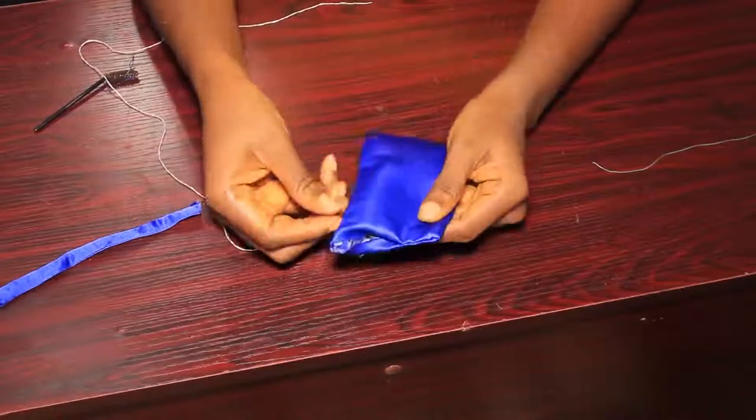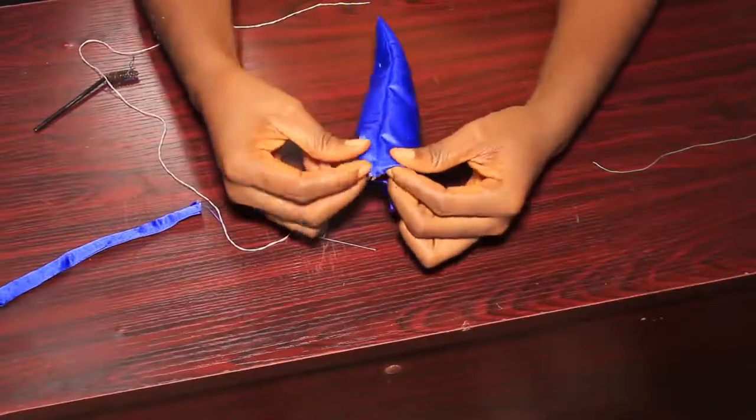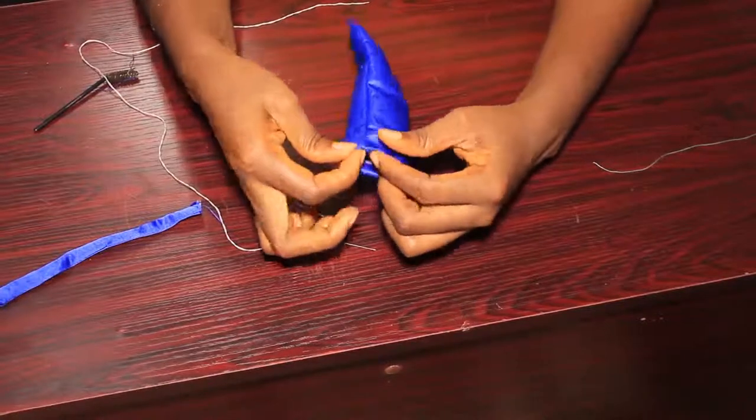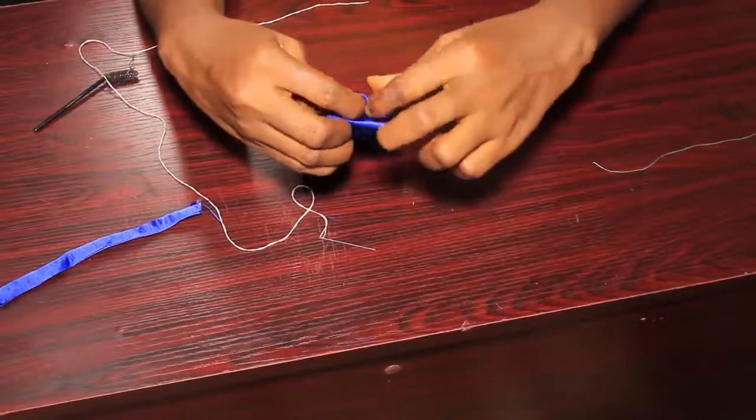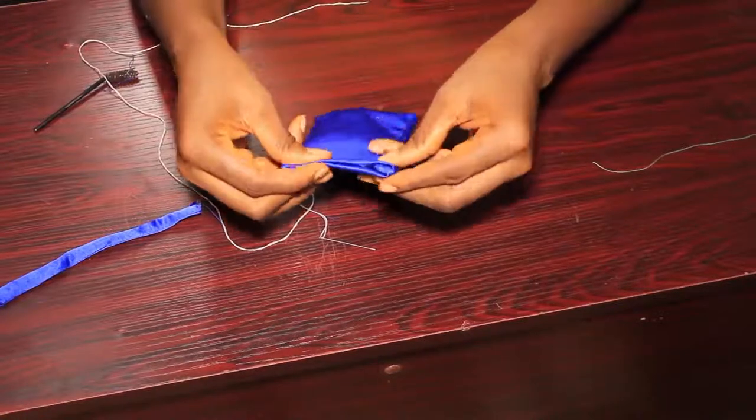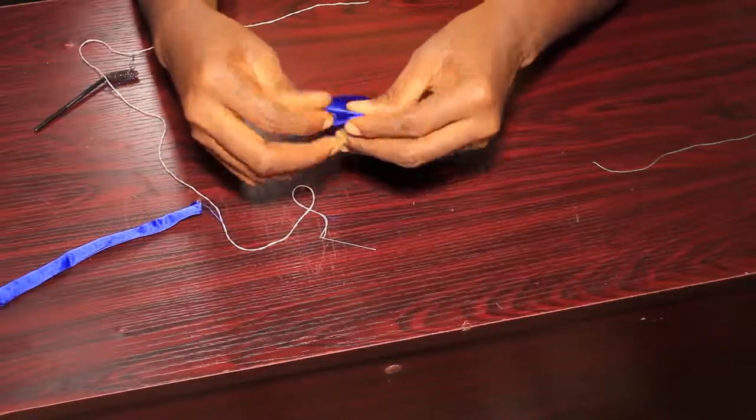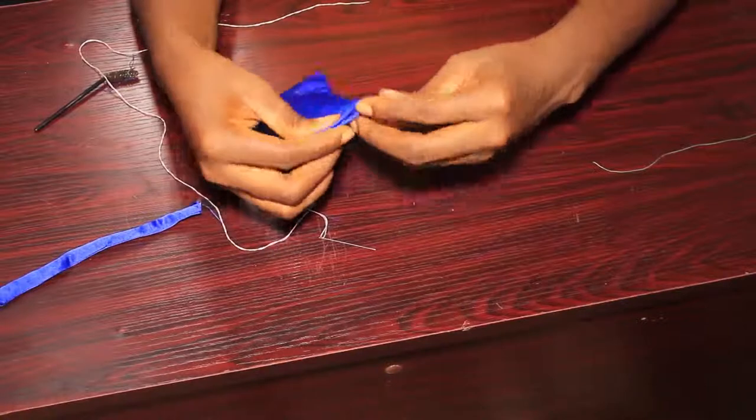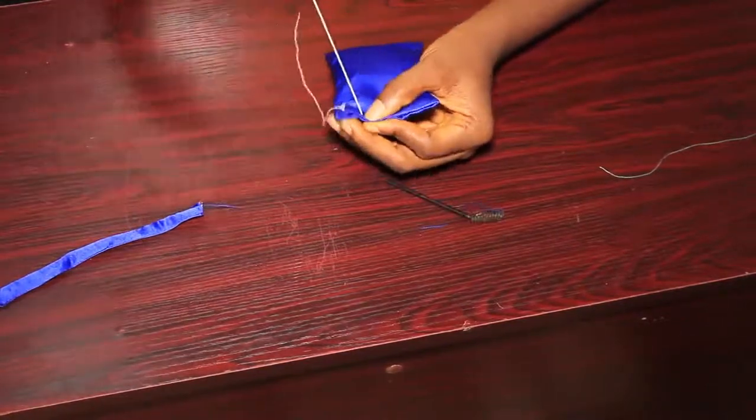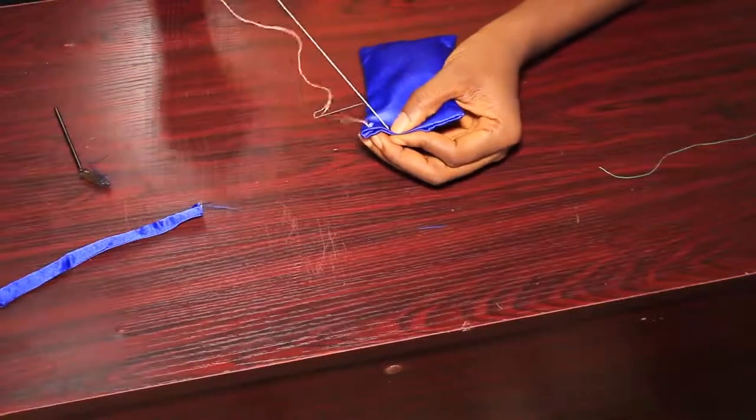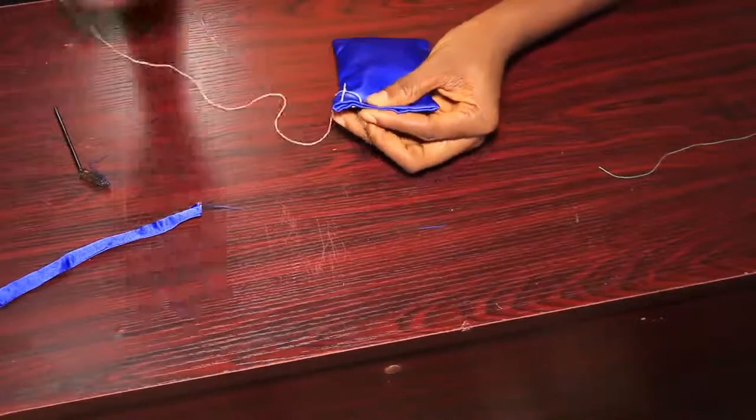The next thing I'm going to do is fold this other side of the fabric inwards. I'm going to fold it in such a way that everything will be on the same level. Try and make sure that yours is on the same level. I'm going to take my needle and thread and start stitching. This is a temporal stitch.